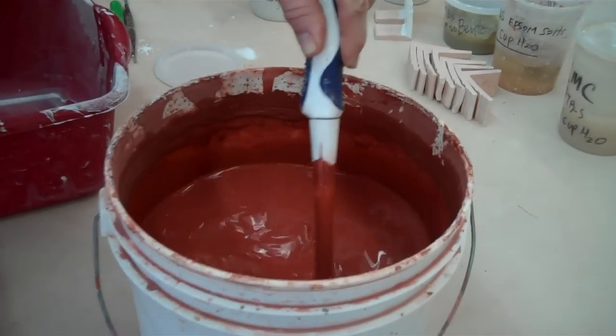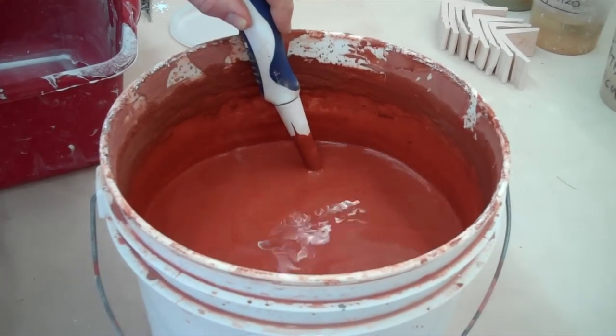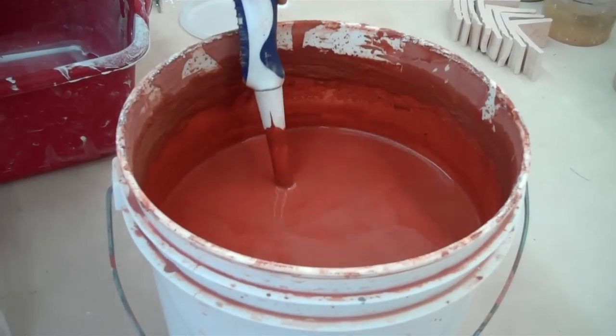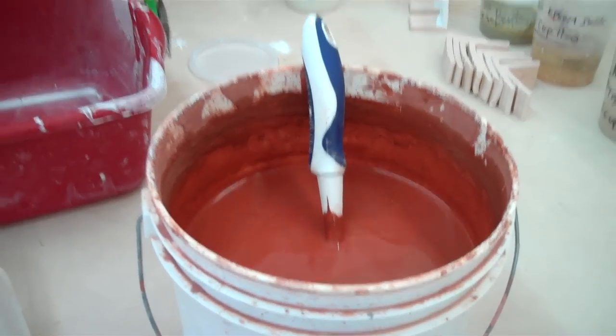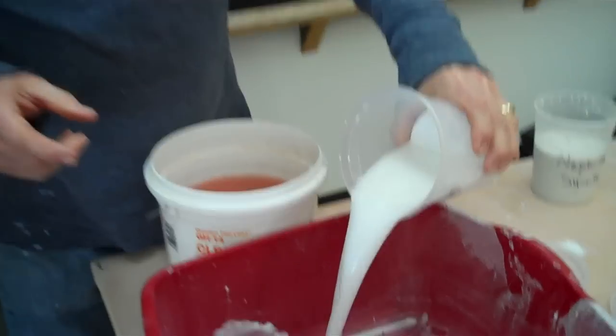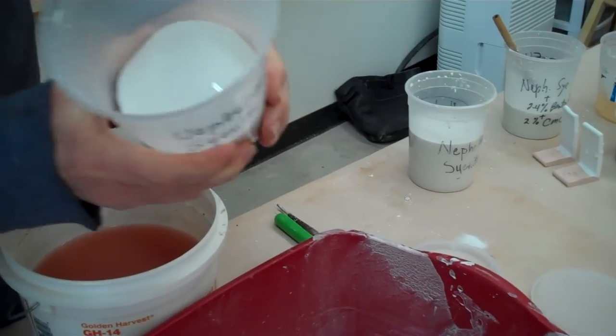See here how this glaze is marbling in there? When you stir it like that, you see how those marbles come up? That is an indication that it's deflocculated. Here is another indication that it's deflocculated: when it hard pans in the bottom like this and won't come out.